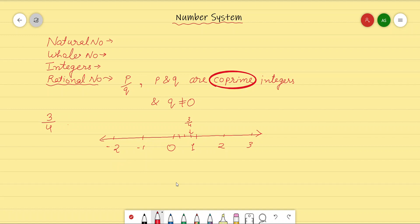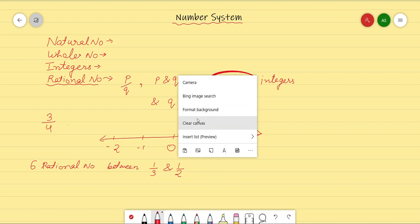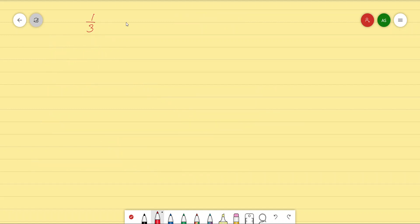After that, the next topic is about finding rational numbers between a pair of rational numbers. For example, if I have to find out six rational numbers between 1 by 3 and 1 by 2. There are several methods to find out the rational numbers between a pair. Here, what we will discuss is the simplest and easiest way to calculate the rational numbers between a pair of rational numbers.